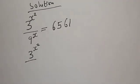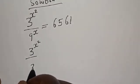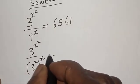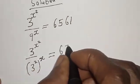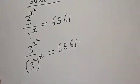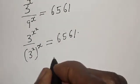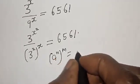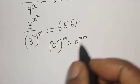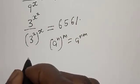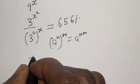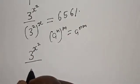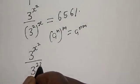9 raised to power s is the same thing as 3 squared raised to power s. Remember that if you have 3 raised to power n raised to power m, it is the same thing as 3 raised to power n times m. Then we have 3 raised to power s squared over 3 raised to power 2s.